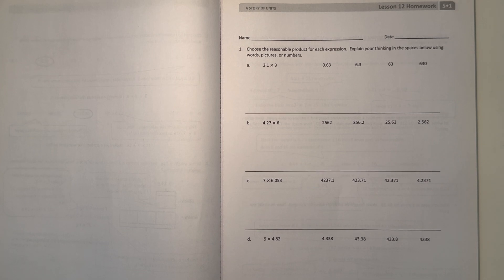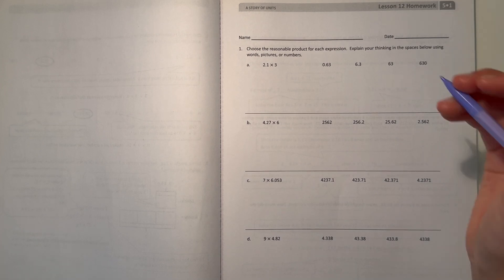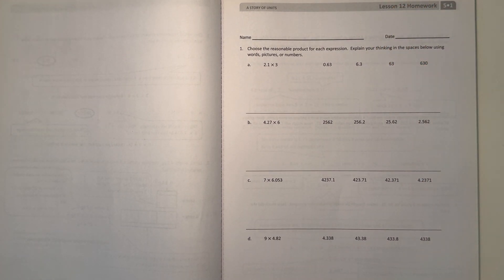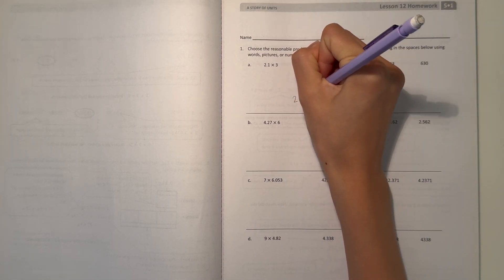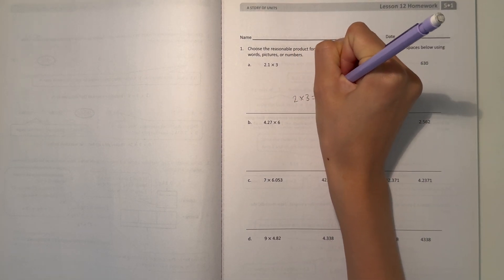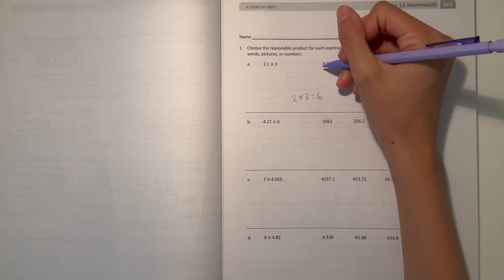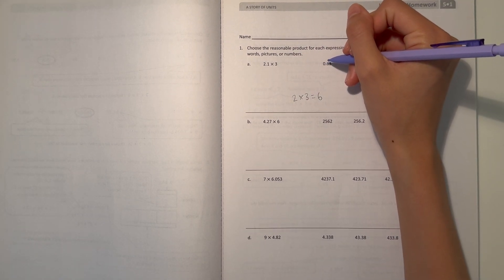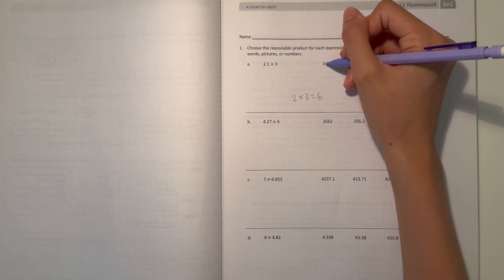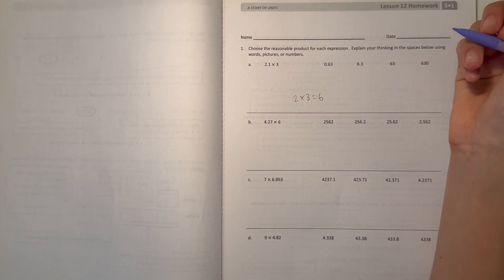we have 2.1 times 3. So here we have some possible answers and we have to estimate which one would be the most feasible. Well, let's see, 2.1 is just a little over 2. So then if we do 2 times 3, that is 6. So then we know our answer must be around 6 or somewhat close to 6.